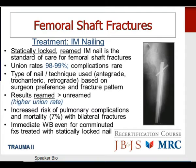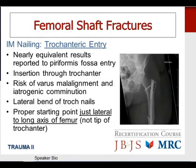Trochanteric entry nailing has come into favor recently with results nearly equivalent to piriformis fossa entry. The nail is inserted through the greater trochanter, with risk of varus malalignment and iatrogenic comminution. This is ameliorated by the lateral bend of trochanteric nails, but the proper starting point remains important: just lateral to the long axis of the femur on the coronal plane image, which may or may not be the tip of the trochanter.